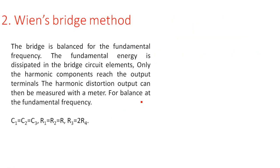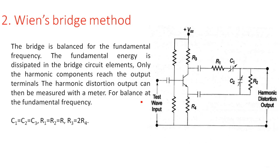In the Wien bridge method, the bridge is balanced for the fundamental frequency and the fundamental energy is dissipated in the bridge circuit elements. Only the harmonic components reach the output terminals and the harmonic distortion can then be measured with a meter. For the balancing condition, we choose the values: C2 = C3, R1 = R2 = R, and R3 = 2R4.